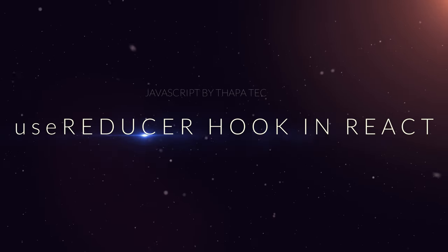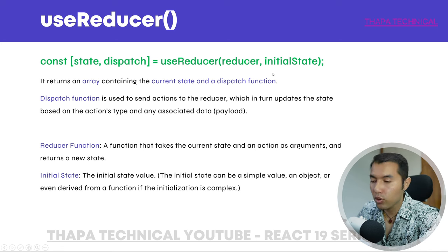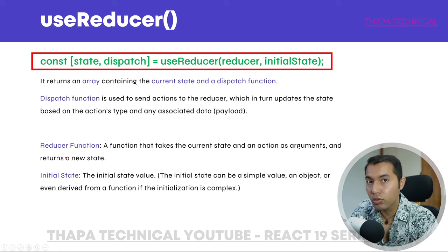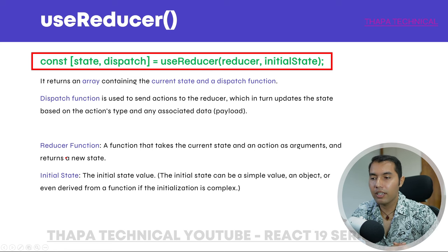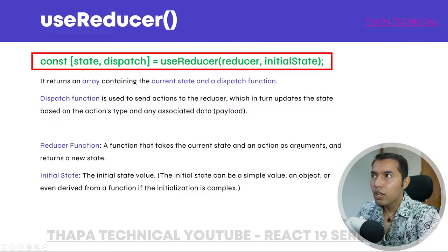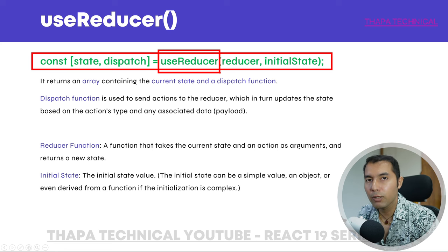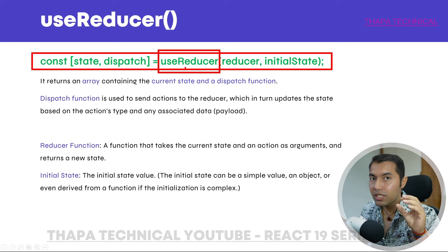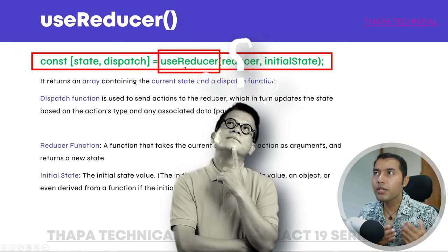Hello, what's up guys. Today in this video we will see the useReducer hook in a React application. First of all, what is this useReducer hook? I have the whole syntax here. We will first understand it and then we will practically see it. Any hook has a prefix 'use' keyword, so here we have the useReducer hook. The useReducer hook returns an array with two elements. Why do we use this useReducer hook?